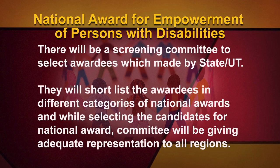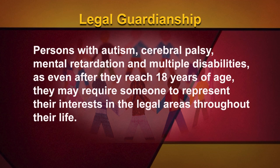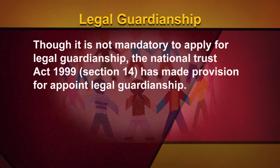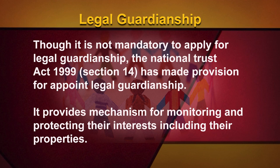Legal Guardianship for Persons with Autism, Cerebral Palsy, Mental Retardation, and Multiple Disabilities: even after they reach 18 years of age, they may require someone to represent their interests in legal areas throughout their life. Though it is not mandatory to apply for Legal Guardianship, the National Trust Act 1999 has made provision for appointing Legal Guardianship. It provides mechanisms for monitoring and protecting their interests including their properties. The parents — in case of conviction of parents — the siblings, relatives, any registered organization, and local level committee may apply for guardianship.